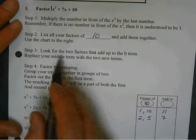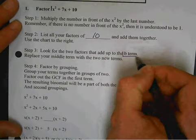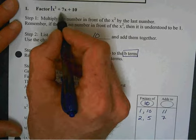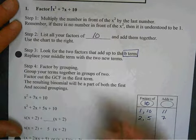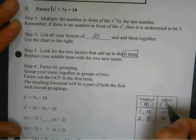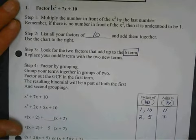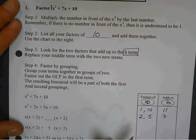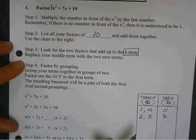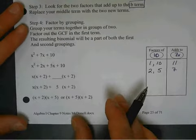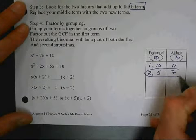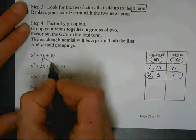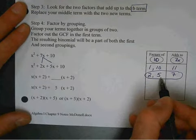It says, use the chart to the right. Look for the two factors that add up to the B term. Let's go back to our problem. What's our B term here? This is the A term. This is the B term. So, it adds to 7x. So, the B term is the middle term. So, we replace the middle term with our two new terms. And then, we factor by grouping. And I'll show you how to do that in a sec. So, here's my example. I'm going to circle my answer right here.